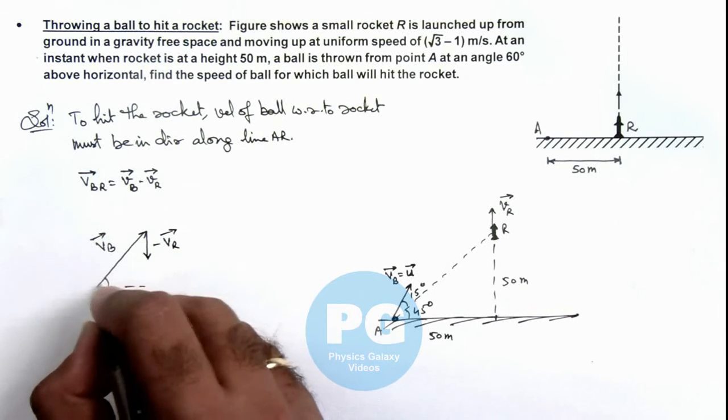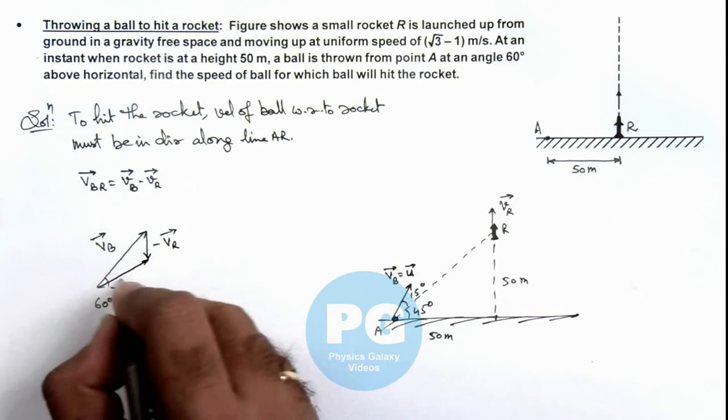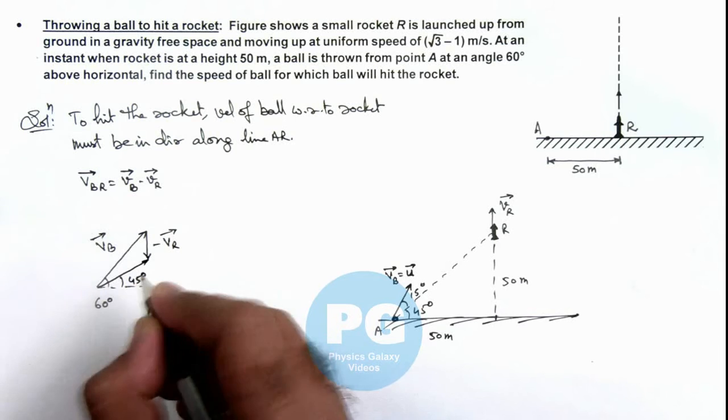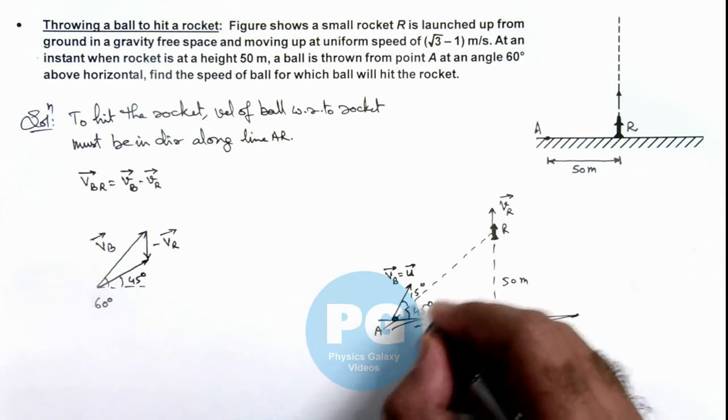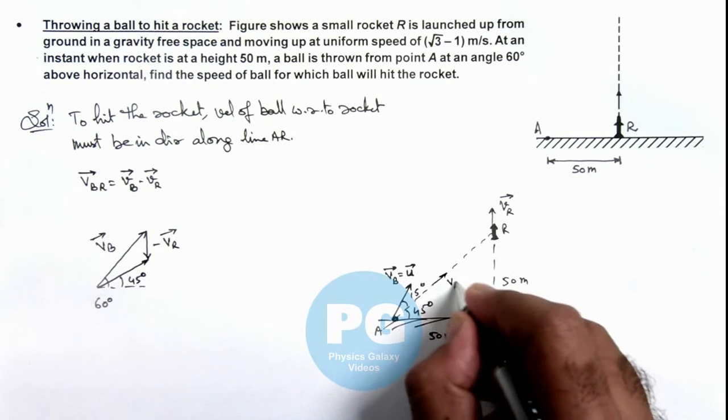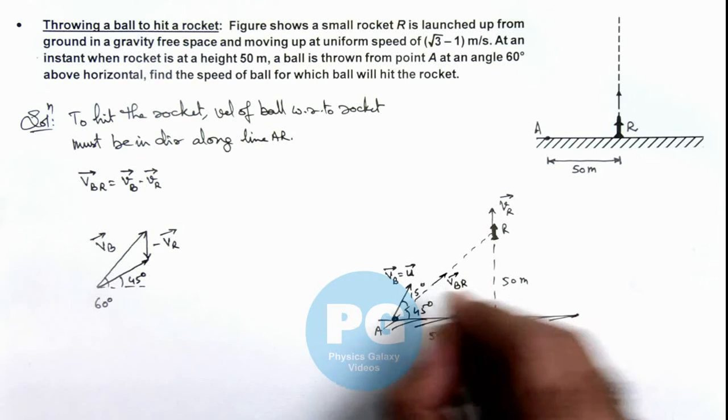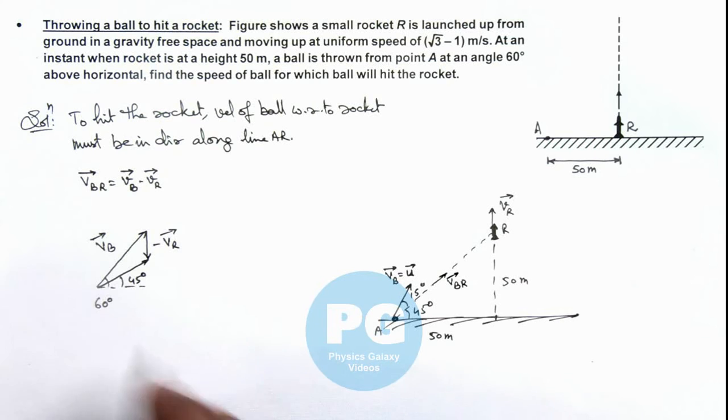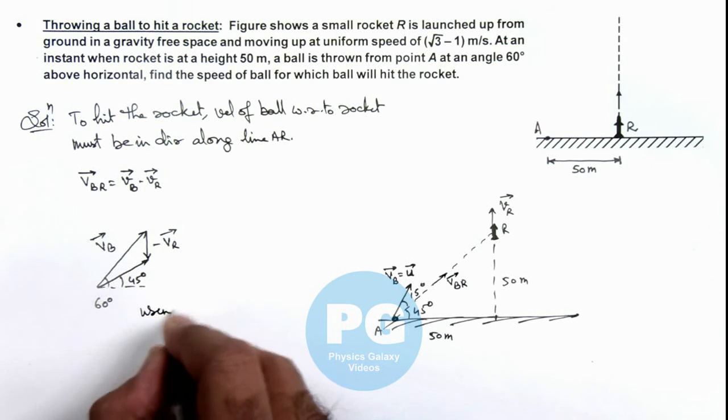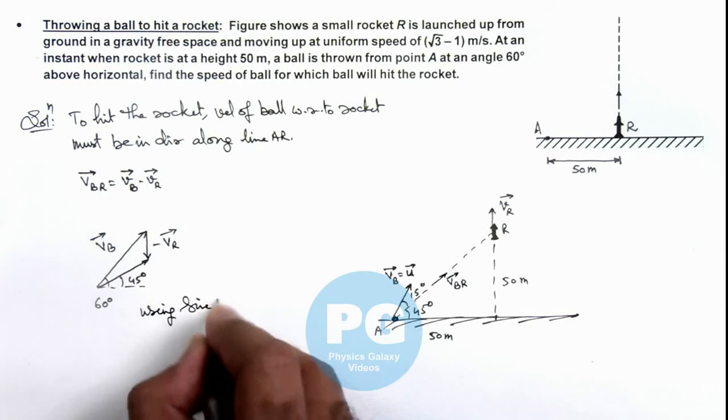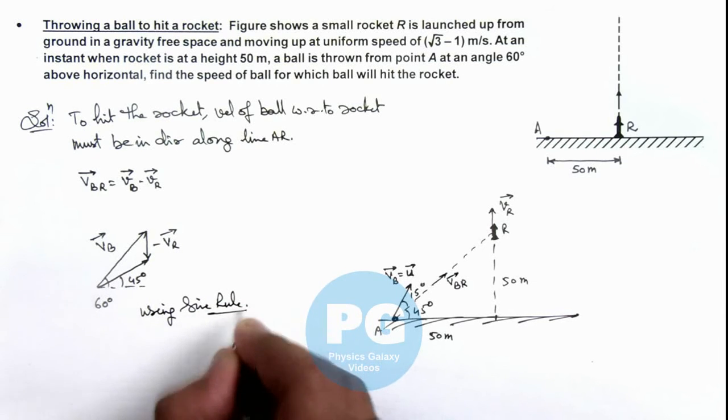And it should be such that the resulting velocity should be at an angle 45 degrees with the horizontal. Then only we can say this is the velocity of ball with respect to rocket along line AR and it is going to hit the rocket. So in this velocity triangle we can see if we use sine rule.